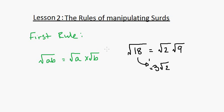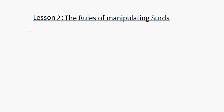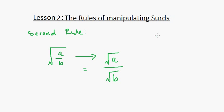Let's look at the second rule. The second rule is that the square root of a over b is equal to the square root of a over the square root of b. For example, the square root of 25 over 16 equals root 25 over root 16. Because we know our squares so well, we know that's 5 over 4. These two rules are very handy.